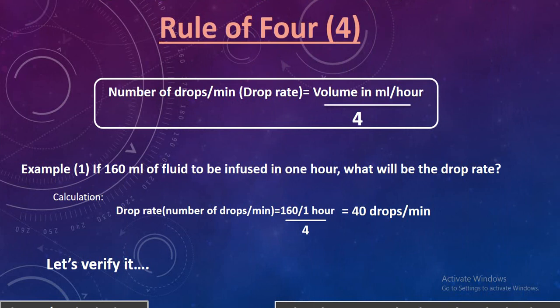Now, coming towards the fluid calculation. For fluid calculation, we will have to memorize the Rule of 4, which is important. The Rule of 4 states that drop rate — which is the number of drops per minute — is equal to volume in milliliters per hour divided by 4.